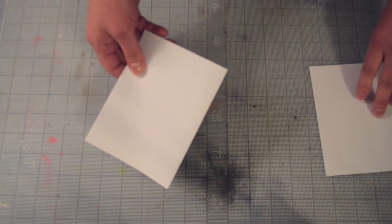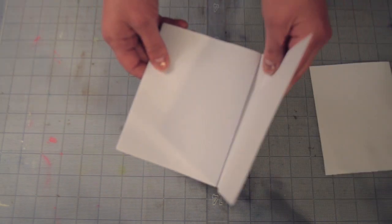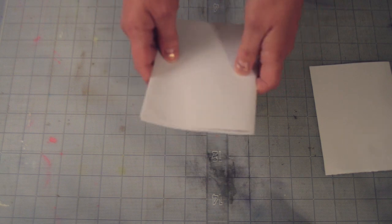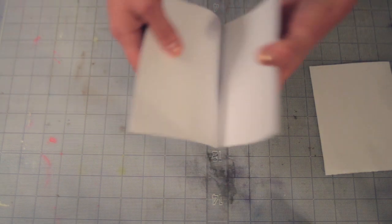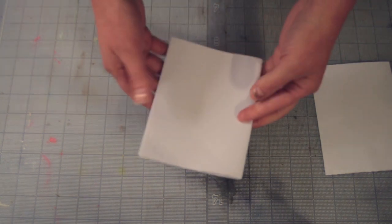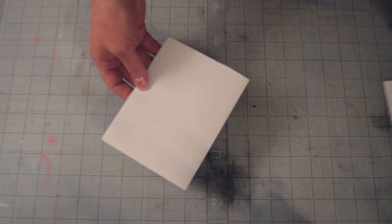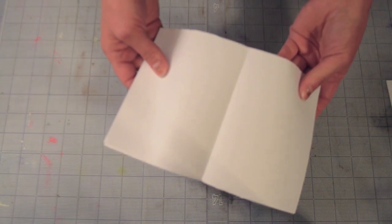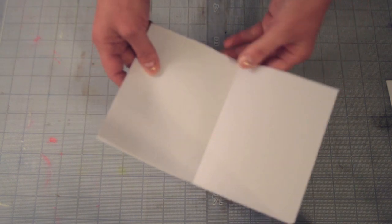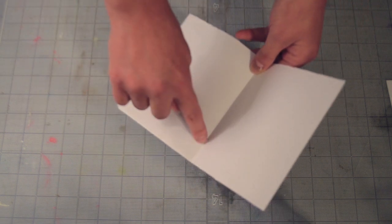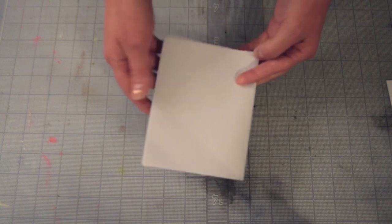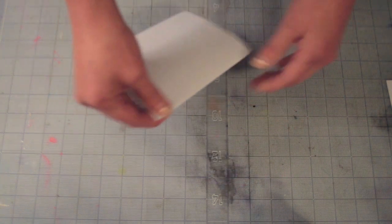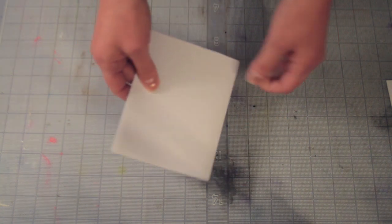I'm going to take a fifth one to use as my cover. And when you have nested together folios, it's called a signature. A pamphlet-bound book is just made with one signature. And later on, we're going to learn how to sew our book together with thread. But for now, since this is just a mock-up, I'm just going to leave it as is.